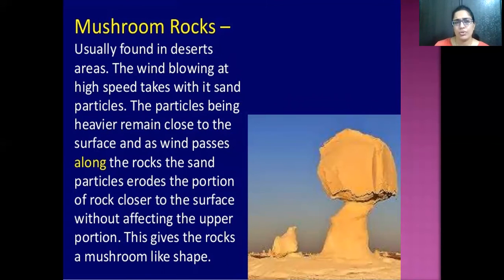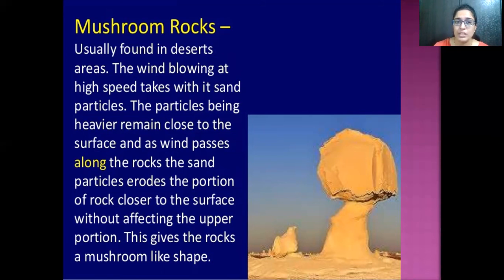Mushroom rocks are rocks shaped like mushrooms, usually found in deserts. Wind blowing at high speed carries sand particles with it. These particles, being heavier, remain closer to the surface. As the wind passes along rocks, the sand particles erode the lower portion, giving the rock the shape of a mushroom.